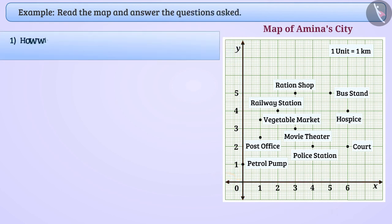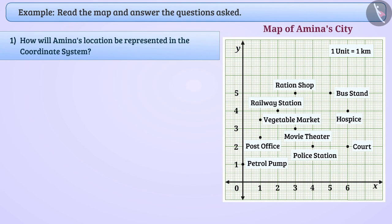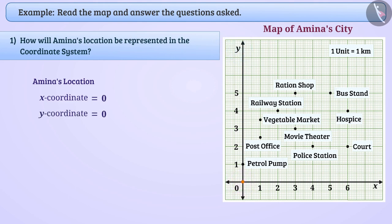How will Amina's location be represented in the coordinate system? Amina's location can be represented by x-coordinate 0 and y-coordinate 0. So her location will be (0, 0). We can call it the origin.